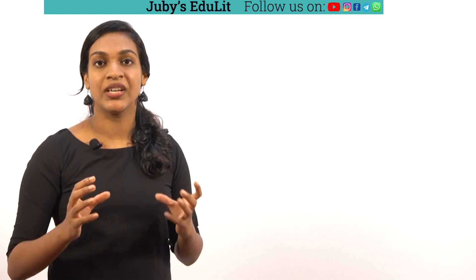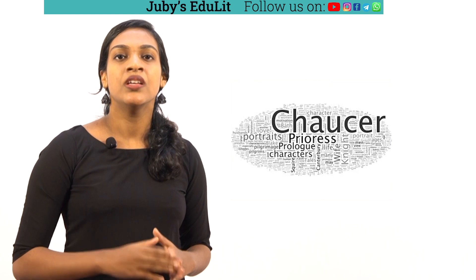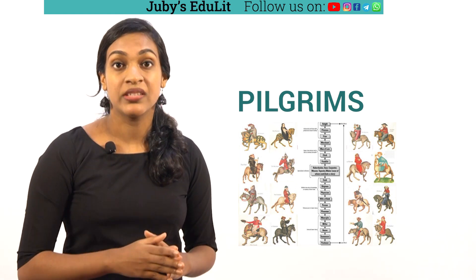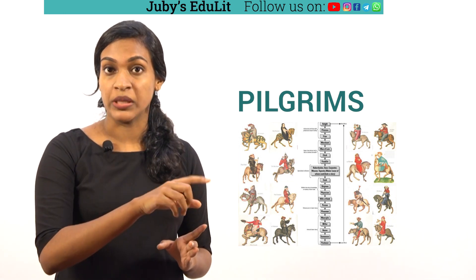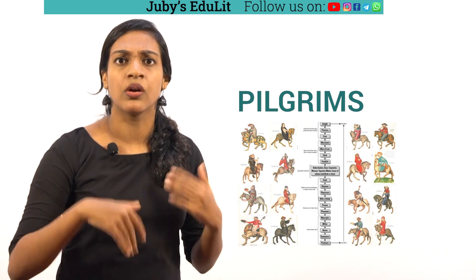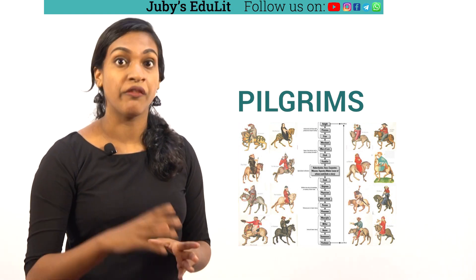Chaucer brings together characters at the Tabard Inn of Southwark. How many pilgrims were there in the Canterbury Tales? Aspirants often find this difficult because they confuse whether it is 29, 30, or 31. The answer is not straightforward. If the question is specifically on the pilgrims, the answer is 30 — 29 pilgrims plus 1 narrator. But if the question is on the group that went on the pilgrimage, the answer is 31, which also includes the host of the Tabard Inn, Harry Bailey.